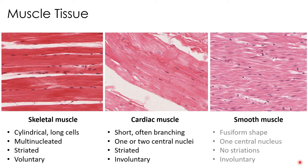Smooth muscle probably has the most distinct shape of all the muscles — it has this kind of fusiform shape to it. There's only one central nucleus in the smooth muscle, no striations, and they are involuntary. We're going to discuss cardiac muscle and smooth muscle in a little more detail in module four, but we are going to be focusing a lot on skeletal muscle in these first two modules.